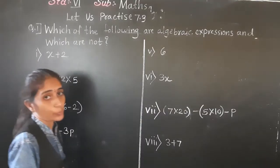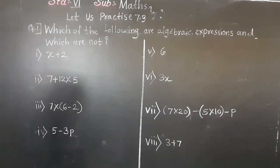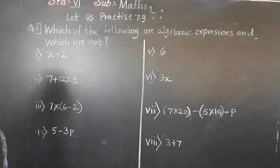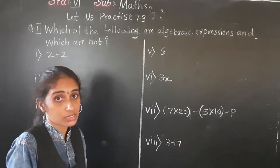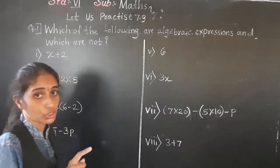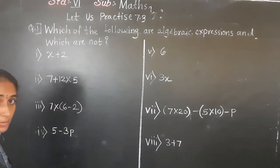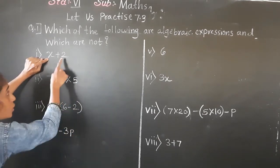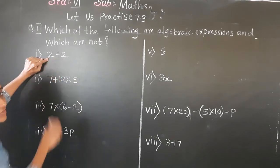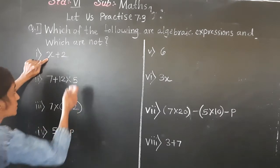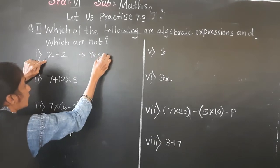Let's solve Practice 7.3, question number 1: Which of the following are algebraic expressions and which are not? An algebraic expression is a combination of constant and variable with basic mathematical operations. In the first example, a variable is there, a constant is there, and the basic operation addition is given. So this is an algebraic expression — yes.